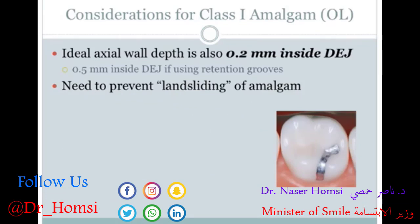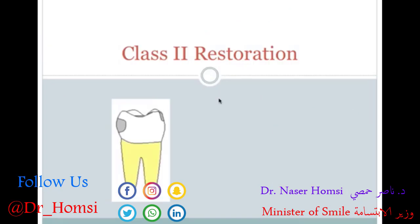Another type of class 1 amalgam restoration is the occlusal-lingual, and it can sometimes be difficult to prevent the landsliding of amalgam as you condense it in.